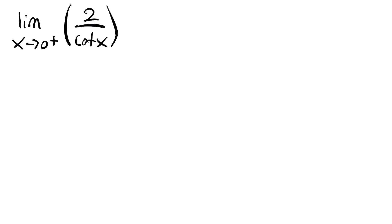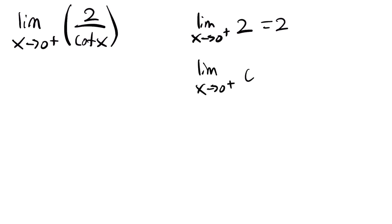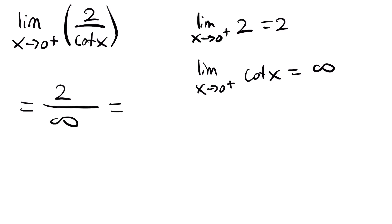Finally, for the limit as x approaches 0 from the right side of 2 divided by cotangent x: the limit of the constant 2 is 2, and the limit of cotangent x as x approaches 0 from the right is infinity. By the quotient property, 2 divided by infinity equals zero.